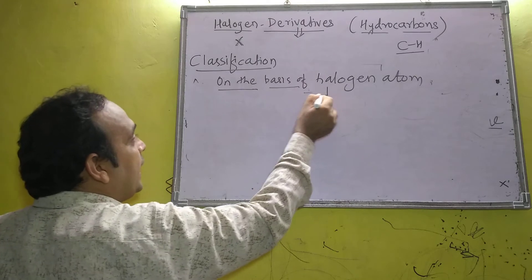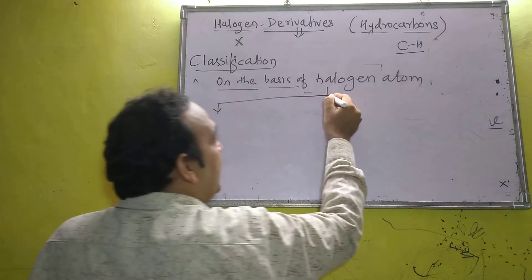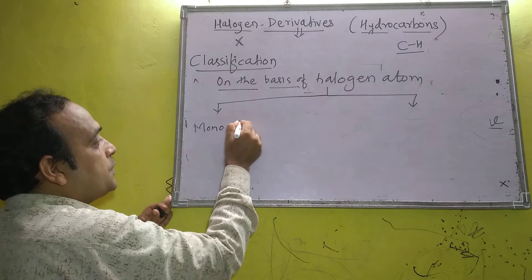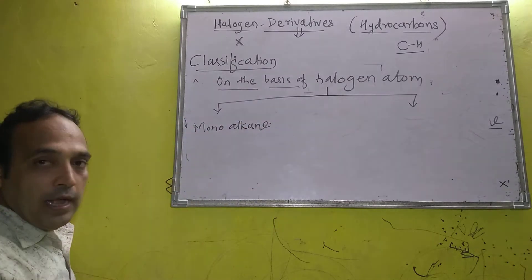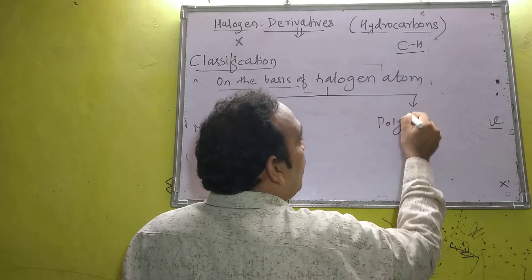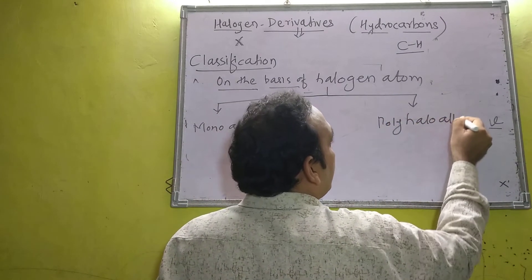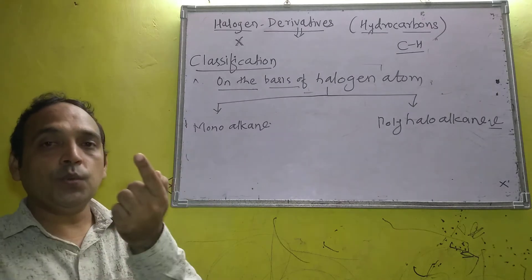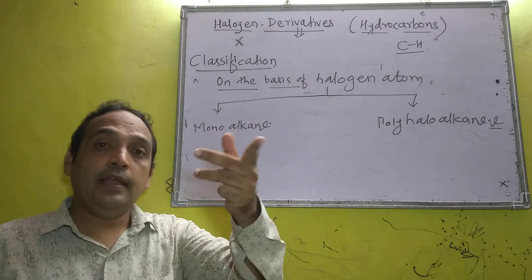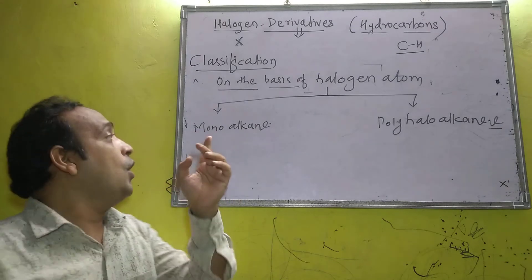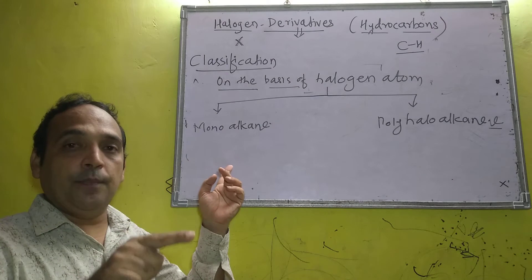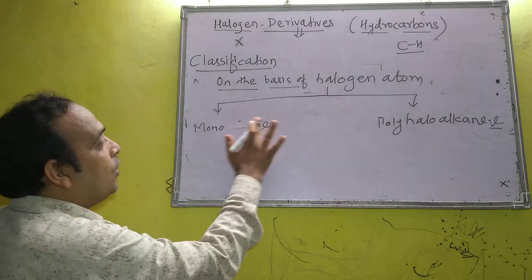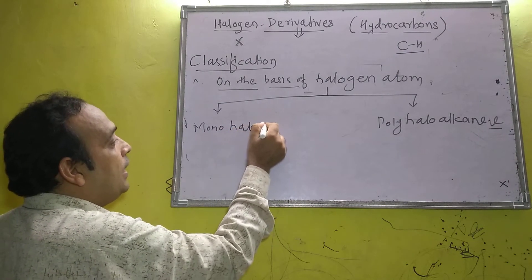On the basis of halogen atoms present, compounds are classified mainly into two types: monohaloalkane and polyhaloalkane. Mono means one; poly means more than one — it may be two, three, or four. When one hydrogen atom of alkane is replaced by one halogen atom, it is called monohaloalkane.